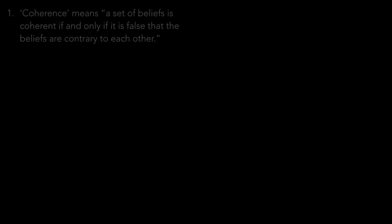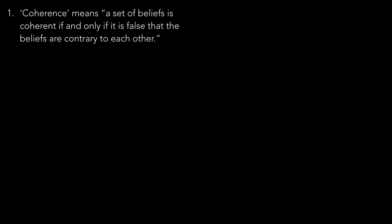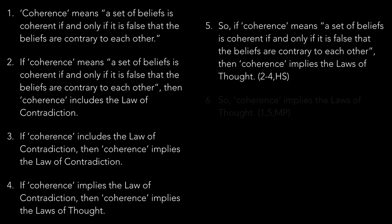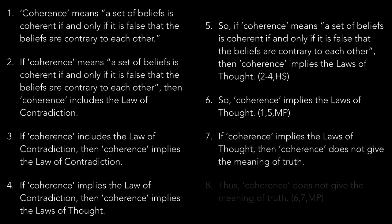The second objection takes issue with what coherence implies. Coherence relies upon the law of contradiction — two or more beliefs are not going to be contrary to each other within a set of beliefs. But that's just the law of contradiction, which we discussed with the laws of thought. Russell points out that if coherence implies the law of contradiction, then you're already working with the laws of thought. And since the laws of thought are going to rule out coherence as a theory of truth, coherence doesn't work — it presupposes what it's trying to define.